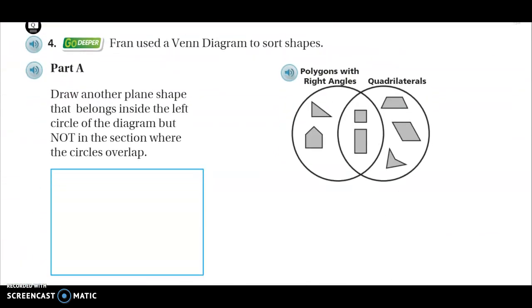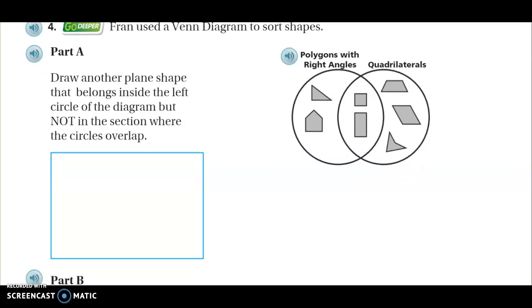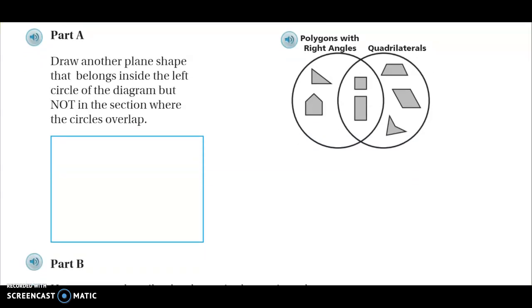Number four. Venn diagrams. What we worked on yesterday. High level stuff here. That's why it says go deeper there. Part A. It's a two-part question. So we're going to need to look over here at our two titles. The left circle is polygons with right angles. The right circle is quadrilaterals. And everything in the middle. You should know what that means.